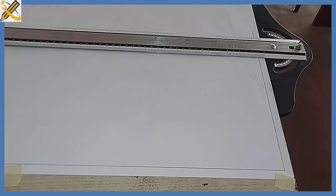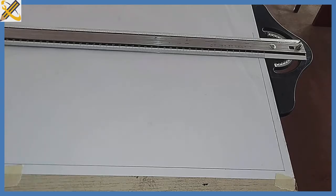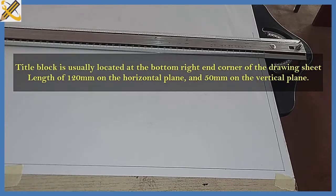Different institutions have different standards for their title block, so there is no single universally accepted standard for a title block. The dimensions used in school A might differ from those used in school B. The title block is usually located at the bottom right corner of your drawing sheet — which is this area here.